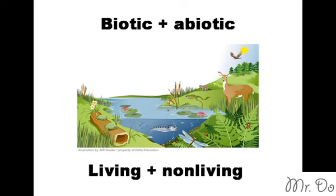Another word for living and non-living things is biotic and abiotic. Biotic is living, and abiotic is non-living. Think of abiotic as — any word you put 'a' in front of becomes non-, like normal and abnormal. So an ecosystem includes abiotic and biotic.